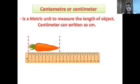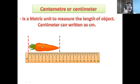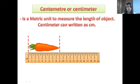What is a centimeter? A centimeter is a metric unit used to measure the length of an object. Centimeter can be written as 'cm'. From one end to the other — this is the length. Our object here is a carrot, so we're going to measure the length of the carrot.